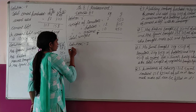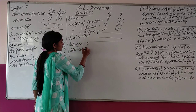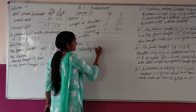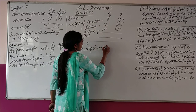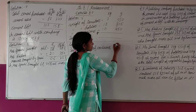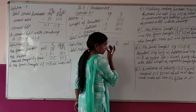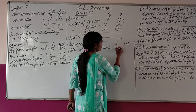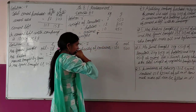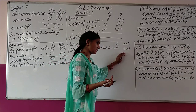So we write: total capacity of container: 120 liter 500 milliliter. Oil fill in container: 65 liter 825 milliliter. We perform subtraction to find how much more oil can be filled.